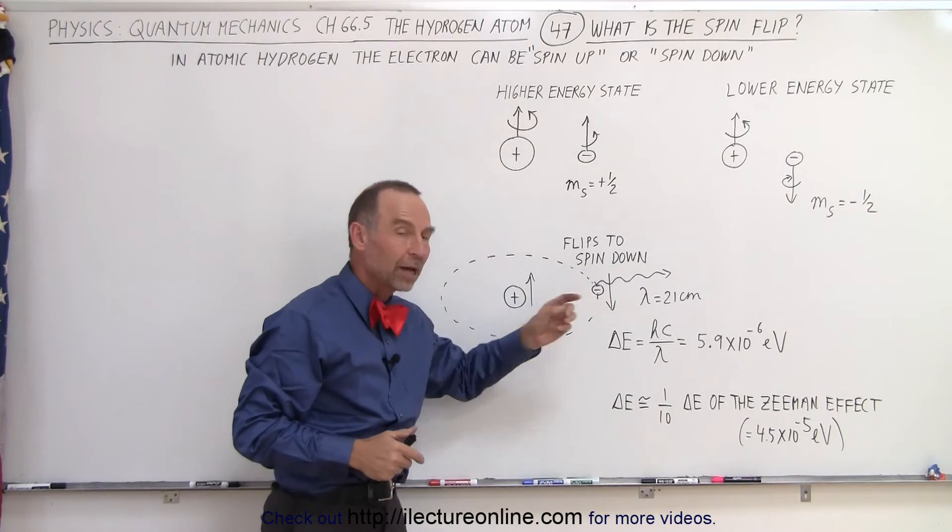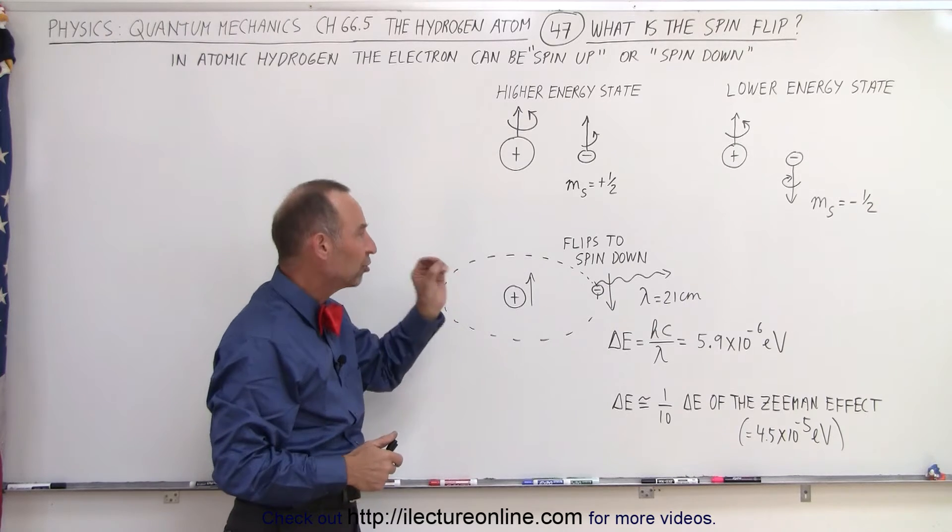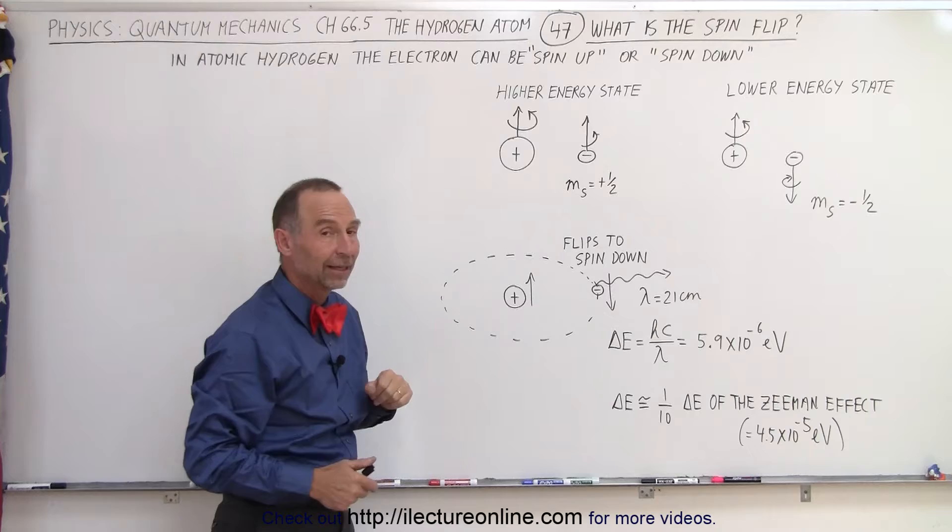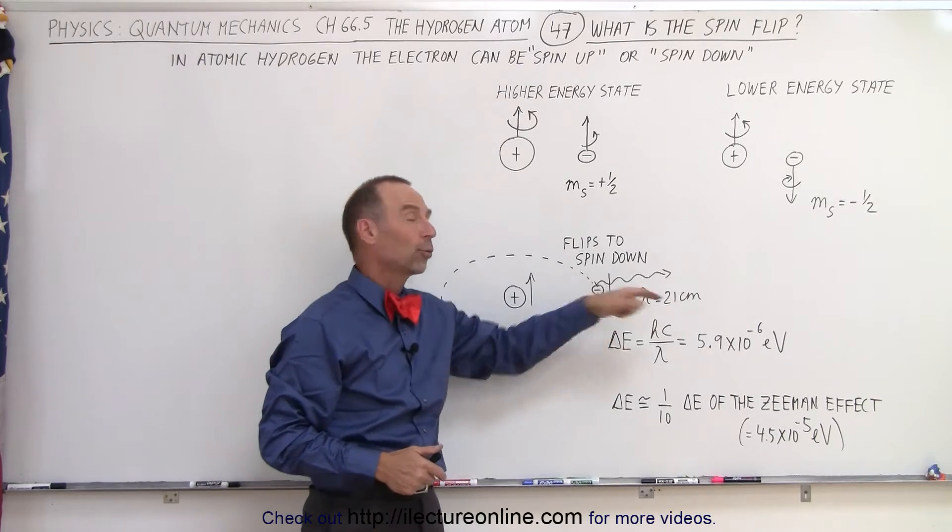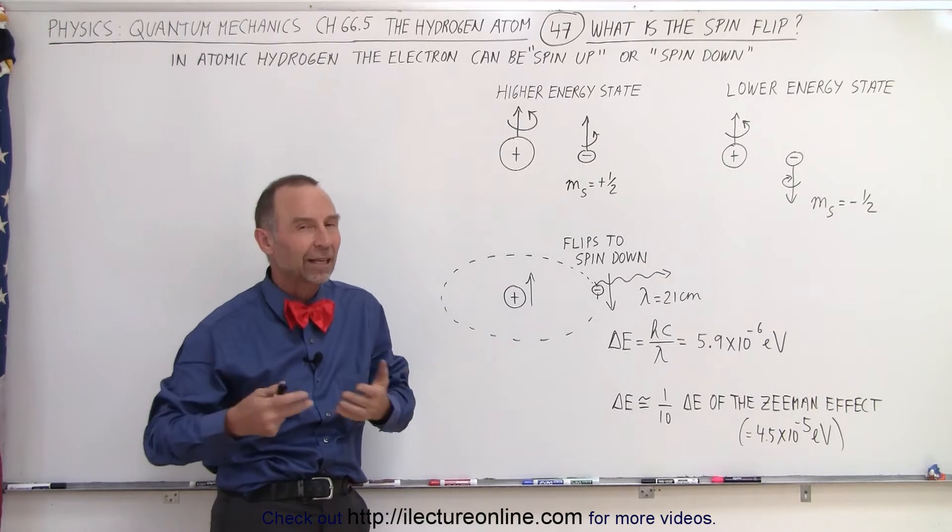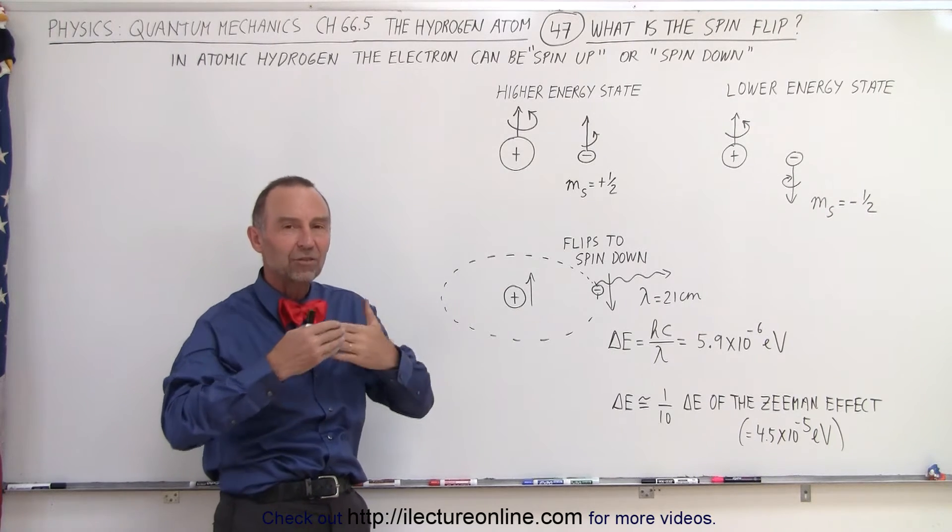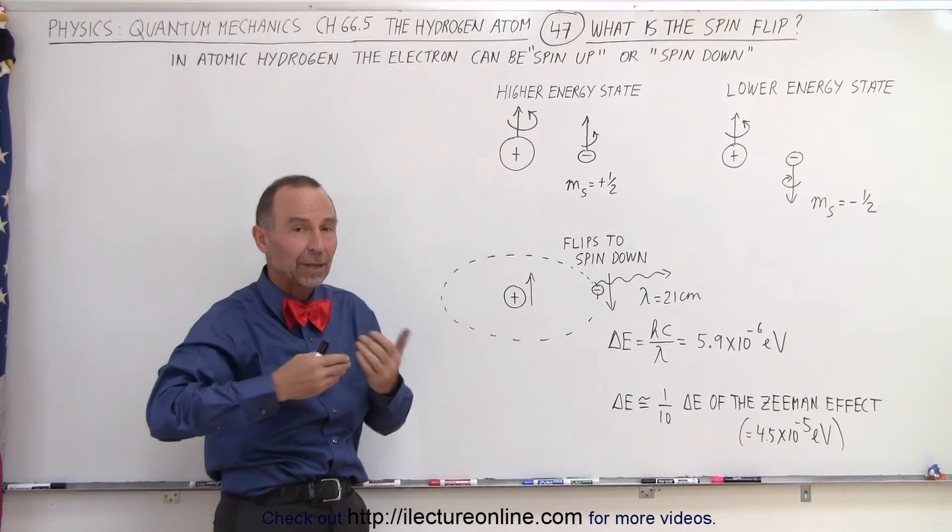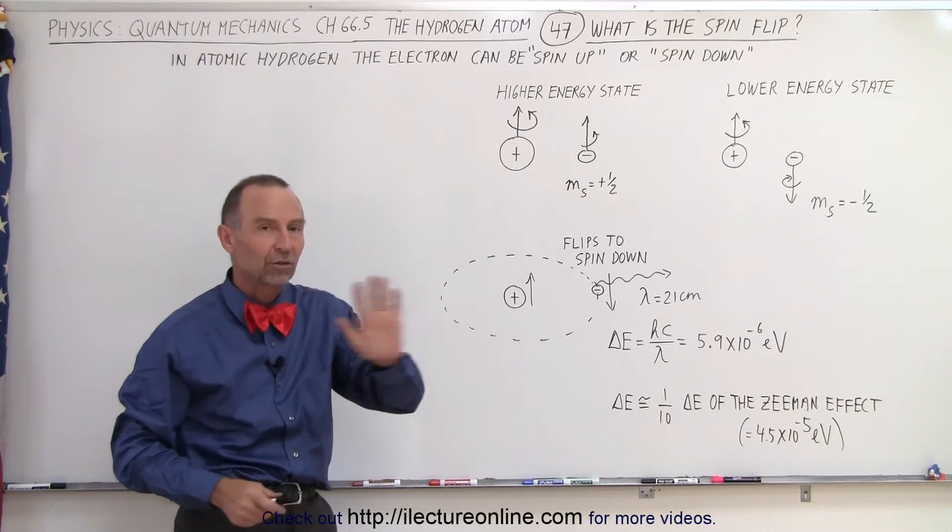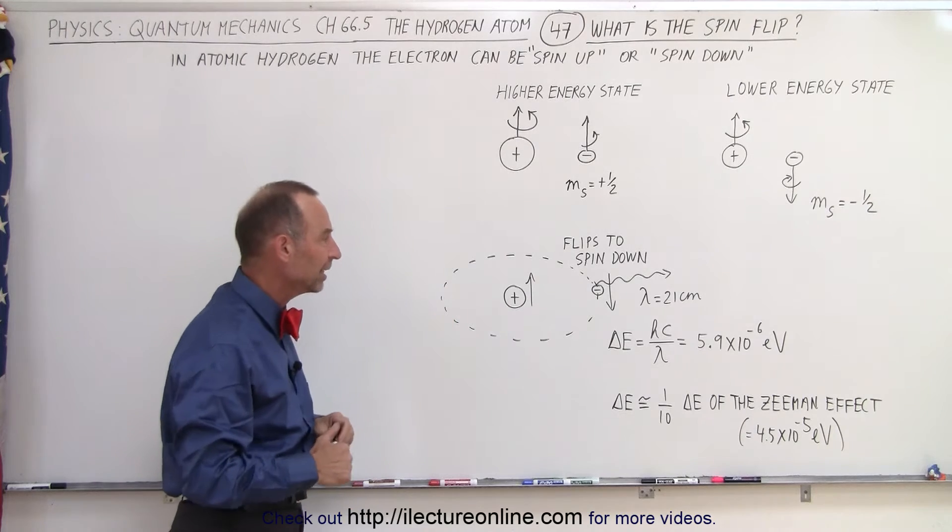Well, it will emit a photon that will then carry away that energy difference from a higher energy state to a lower energy state. That photon will have a wavelength of 21 cm, and in astronomy that is known as the 21 cm wavelength that they look for, so that way they can see through interstellar dust and be able to see, for example, what happens at the other end of the galaxy when it's blocked by all these dusty nebulas.